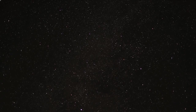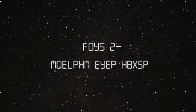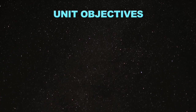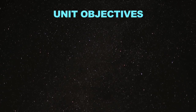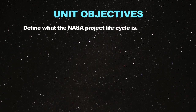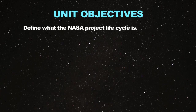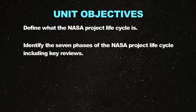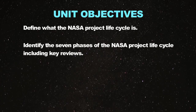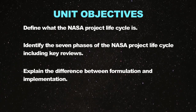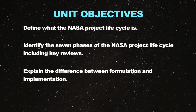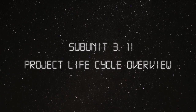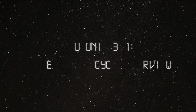Welcome to NASA and the Seller Foundation Space System Engineering Course, Unit 3, Project Life Cycle. The learning objectives for Unit 3 include: define what the NASA project life cycle is, identify the seven phases of the NASA project life cycle including key reviews, and explain the difference between formulation and implementation. Subunit 3.1, Project Life Cycle Overview.